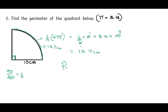Now let's get the perimeter — we add all the sides. Here it is 15.7, here it is 10, and this is also 10 because this is also a radius. So we have 10 + 10 + 15.7 = 35.7 centimeters. That is the distance around this quadrant. You can see how important knowing circumference is.